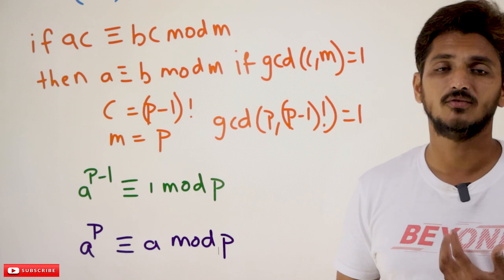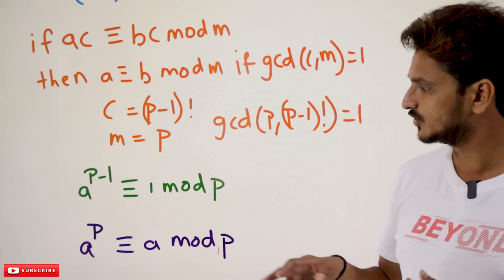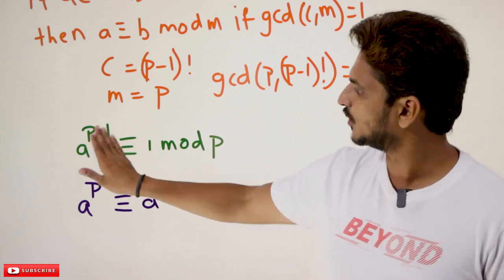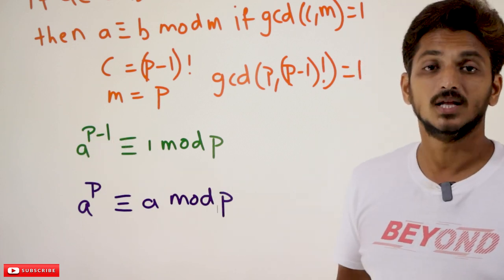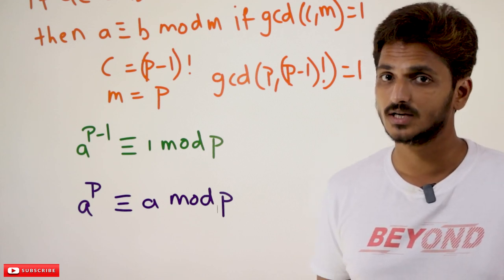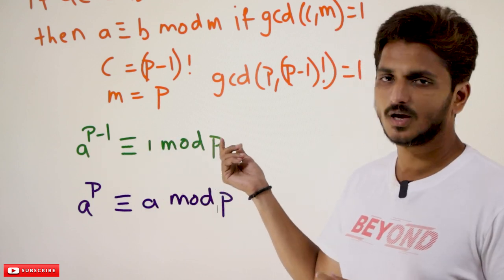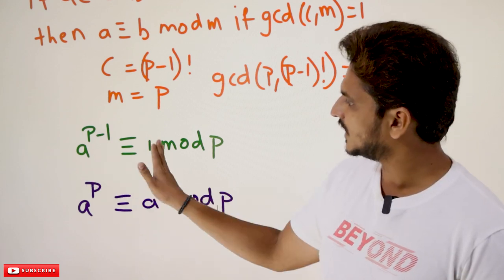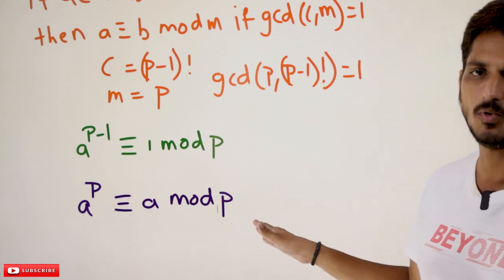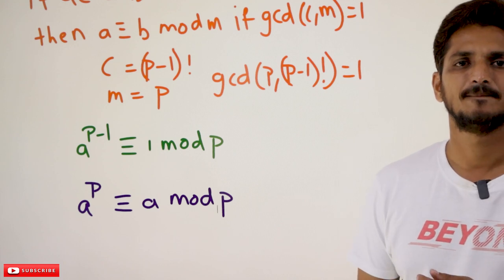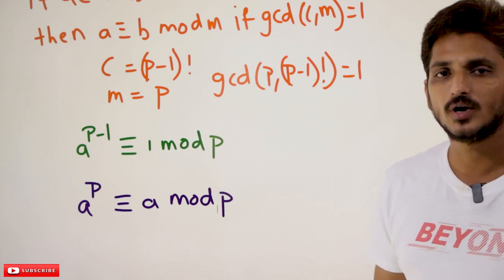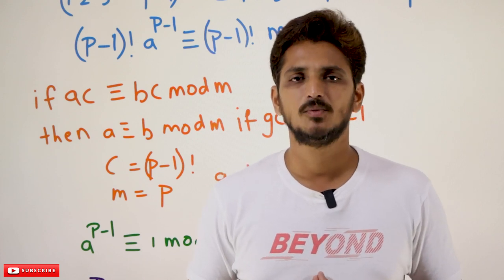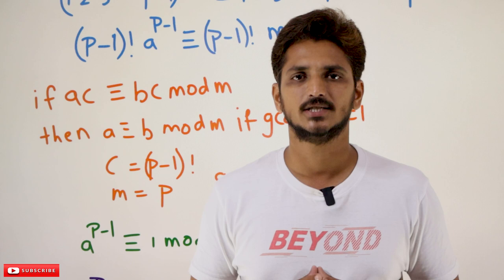This is what we need to show in Fermat's Little Theorem. And sometimes they are going to show you the same thing like this: a^p ≡ a (mod p) — meaning multiply both sides by a. Using the property from the last class that a ≡ b (mod m) implies the same modulus when multiplied by any constant, multiplying both sides by a gives a^p ≡ a (mod p). You can show this or the first form — both are the same. Hope you understand Fermat's Little Theorem. If you have any questions regarding the concept, please post your questions in the comment section below. Thanks for watching. If you haven't subscribed to our channel, please subscribe and press the bell icon for the latest updates. Thank you.